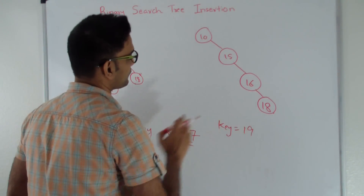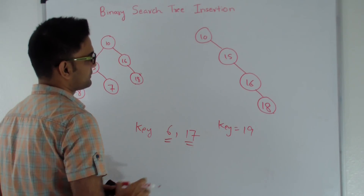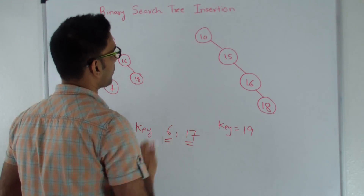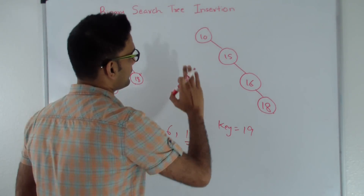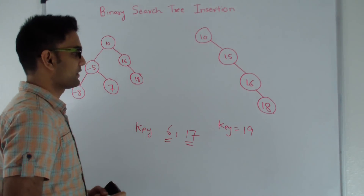This here is also an example of a binary search tree. 15, 16, and 18 are all greater than 10, which is why they are on the right side of 10.